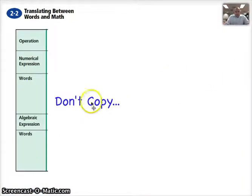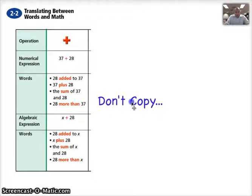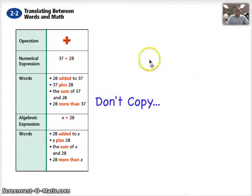I'm going to go through this rather quickly because I'm going to give you a copy of this at school. So don't copy this. This is a great table, though, to help translate between words in English. If you see a numerical expression like 37 plus 28, or x plus 28 as an algebraic expression, there's different ways in which you can say that. You can say 28 plus 37, 28 added to 37, the sum of 37 and 28, or 28 more than 37. So that's how we can say those things.